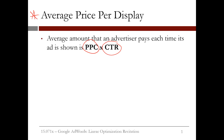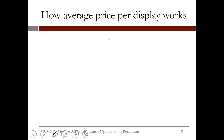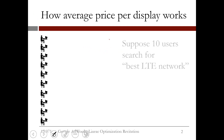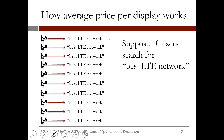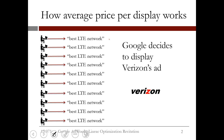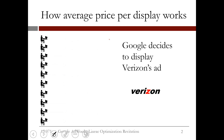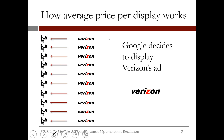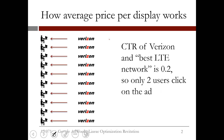Let's go through an example to see how this works. Suppose that we have 10 users who search for 'best LTE network'. Google decides to display Verizon's ad to all of them. We know that the click-through rate for Verizon and for the best LTE network query is 0.2, so only two users click on the ad.